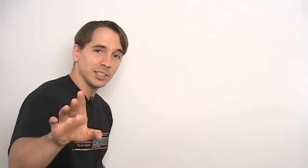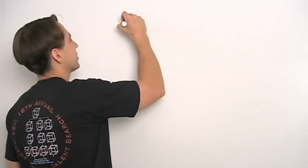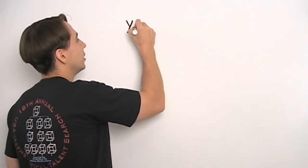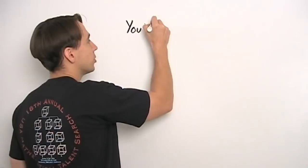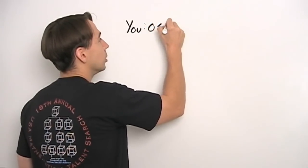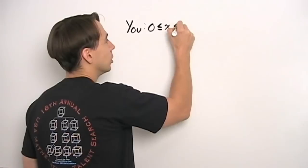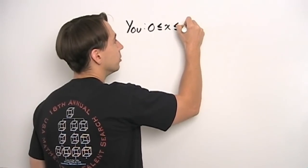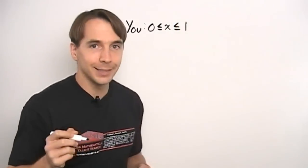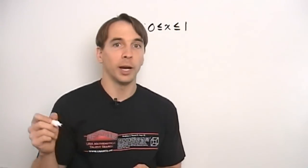Here's how this game's going to work. Keep in mind, this is going to be a good game, because if you win, I'm going to send you and your whole family right off to Disney World. You're going to pick a number from 0 to 1 — we'll call your number x. You can pick 0, 1, a half, a third, pi divided by 10, or the square root of 2 minus 1.